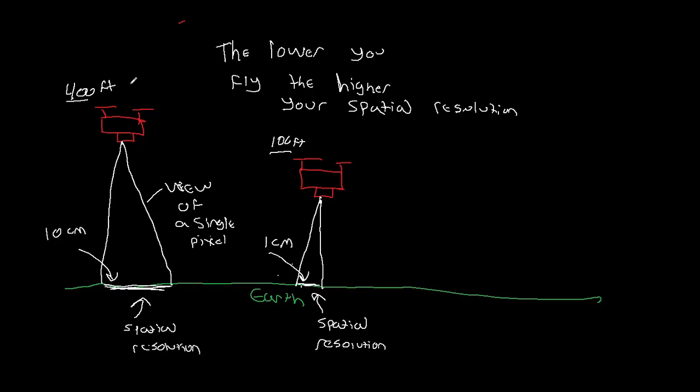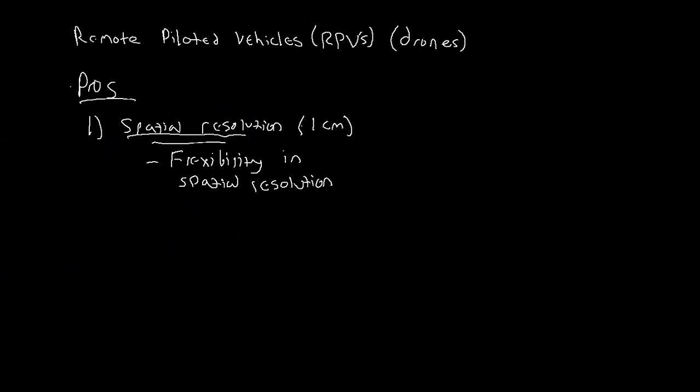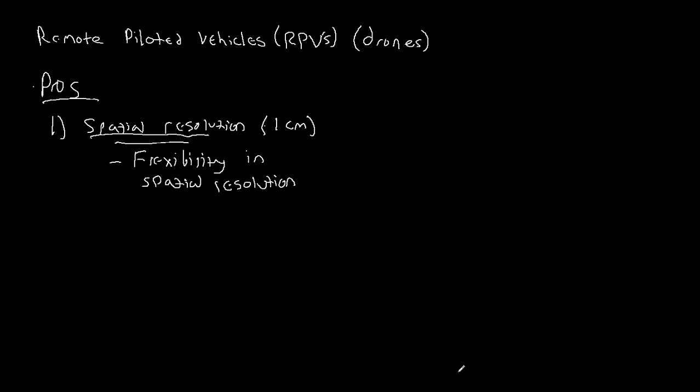The nice thing with the drone is that you can control this flight height with a lot more precision and you have a lot more options. So you can get imagery at, you have much more flexibility over your spatial resolution. That's probably the biggest pro, flexibility in spatial resolution and just in general having really really high spatial resolution.